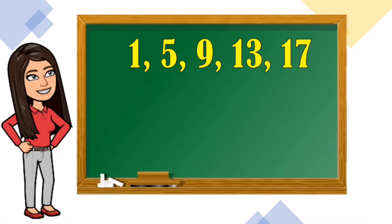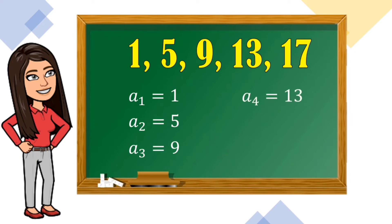Where a sub 1 is the first term, which is equal to 1. Not all the time the first term is equal to 1 — it is just in our example. And a sub 2 is 5, which is the second term. A sub 3 or the third term is 9. A sub 4 or the fourth term is 13. And a sub 5 or the fifth term is 17. In this example, our last term is 17.